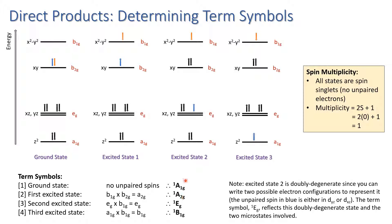The second excited state has an electron in eg and one in b1g. So the direct product that we want is b1g cross eg. b1g cross eg gives eg. So the second excited state has the term symbol singlet Eg.